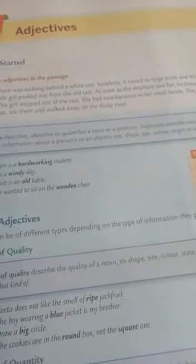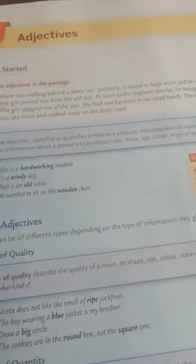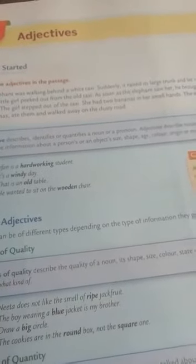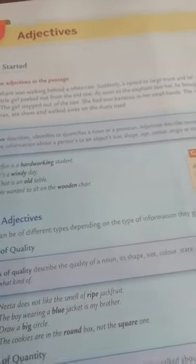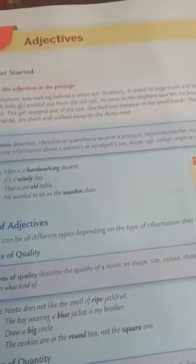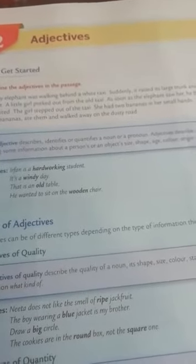Interrogative adjective is used to ask questions about nouns. Example: Which book has been awarded the Booker Prize this year? Demonstrative and interrogative adjectives always come before the nouns they qualify, while demonstrative and interrogative pronouns do not.